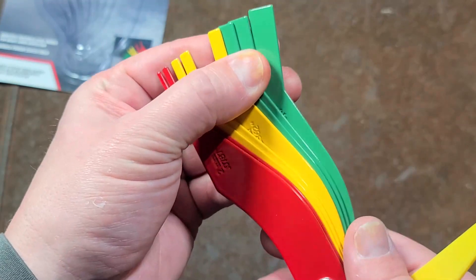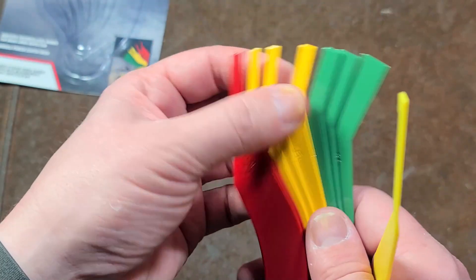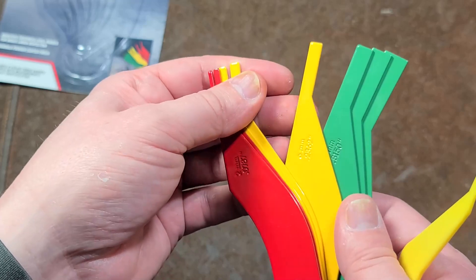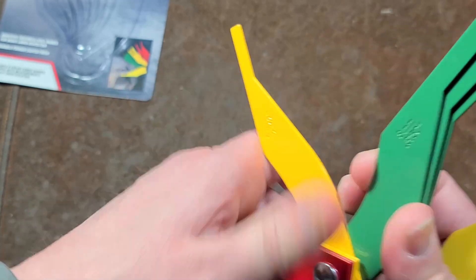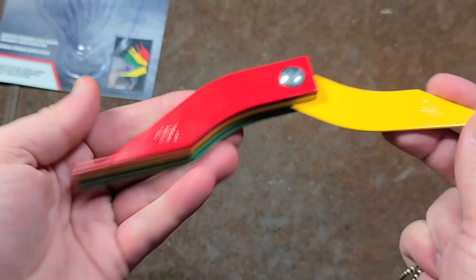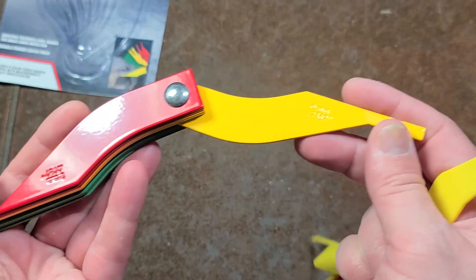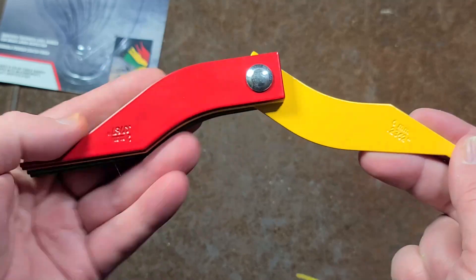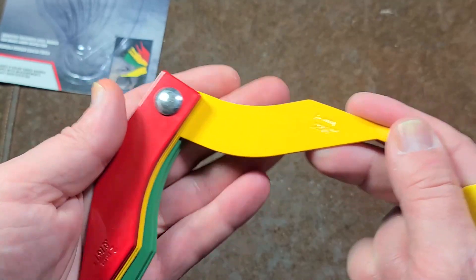The problem with these, of course, is the fact that they're all put together. So if you need to use the six millimeter one, you have to take these, rotate them around, get the six millimeter in there, and then it becomes just this huge old tool which is very difficult to use in a lot of situations.